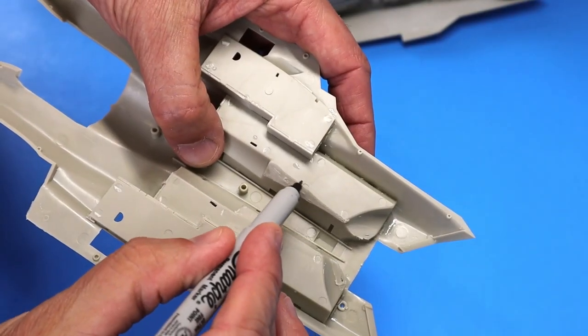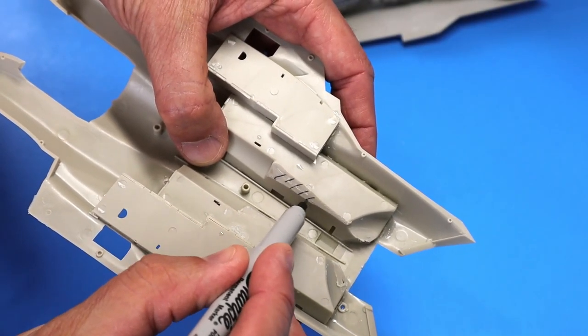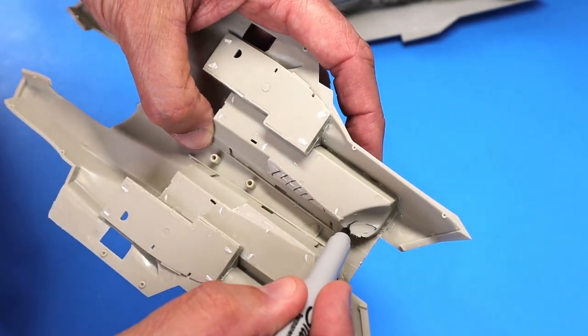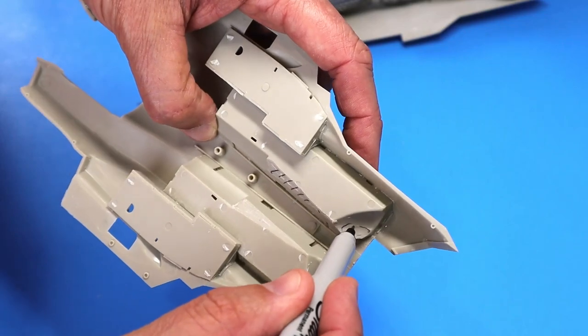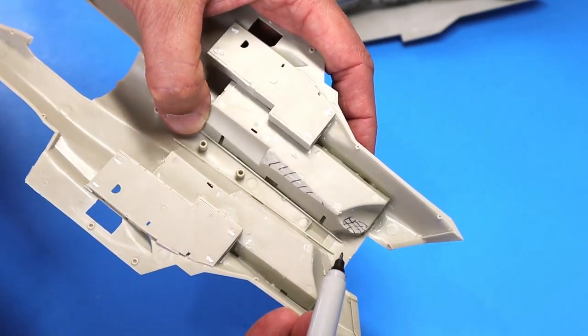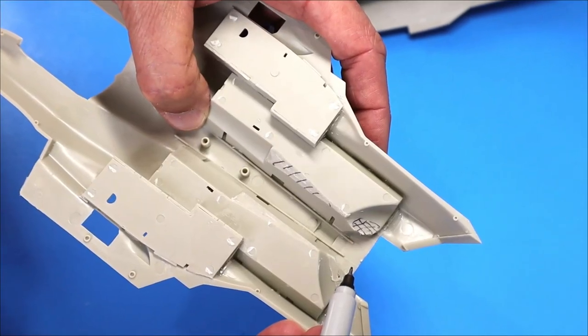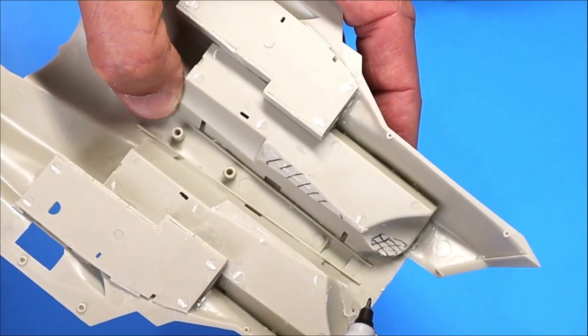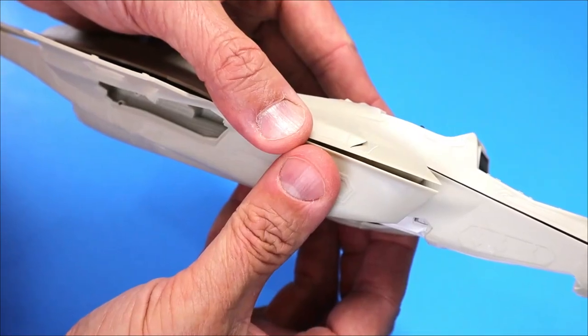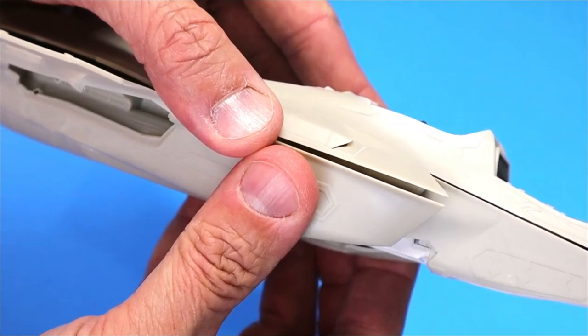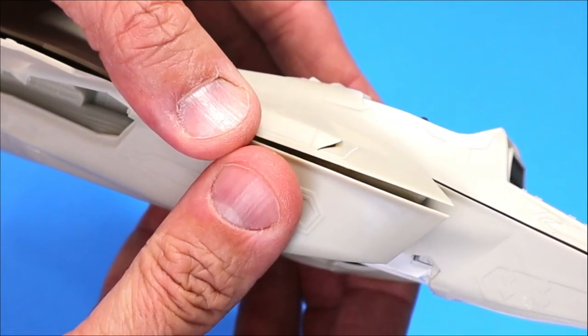To fix that upper and lower fuselage joint, I first tried to grind down some of the high spots on the wheel bay inserts. I used a Sharpie to mark those so you can see those areas better. There's a decent amount of excess plastic there to allow you to sand down. Just be careful if you're building this thing with the weapons bay open that you don't sand too much. While this alleviated some of the interferences with the engine intake trunk and the intakes themselves, it didn't really actually help the upper to lower fuselage joint problem.